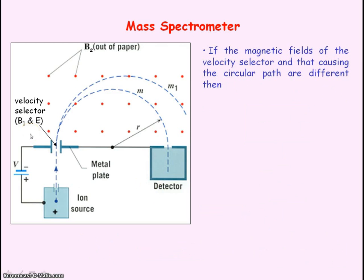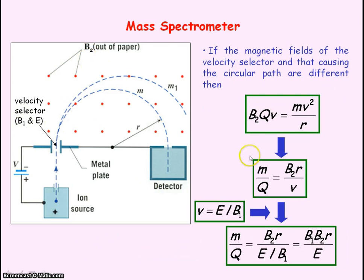If the magnetic fields of the velocity selector and that causing the circular path are different, we can say B1 and B2. Then the mass per unit charge will equal B1 times B2 times R divided by E.